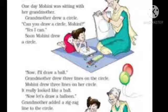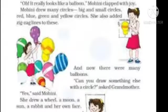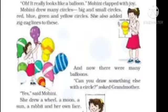Now, let's draw a balloon. आगे वो कह रही है, चलो अब हम balloon draw करते हैं. Grandmother added a zigzag line to the circle. अब Grandmother ने उस circle में एक zigzag line add कर दिया. Oh, it really looks like a balloon. Mohini clapped with joy. अब Mohini खुश होकर clapping करते हुए बोलती है कि ये तो एक balloon की तरह दिख रहा है!